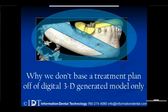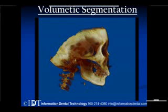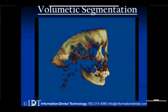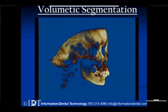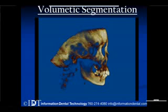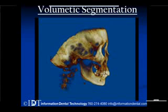But the reason that we don't use the 3D model exclusively is because of volumetric segmentation. When you get a DICOM scan and put it into the software, we reconstruct a model from that DICOM. And when we create the 3D model, it's set on a threshold using Hounsfield units.